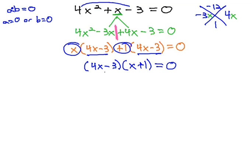Now that it's factored, we see one thing times another equals 0. If we see one thing times another equals 0, then one of those factors must be 0. Either 4x minus 3 equals 0, or the x plus 1 equals 0.